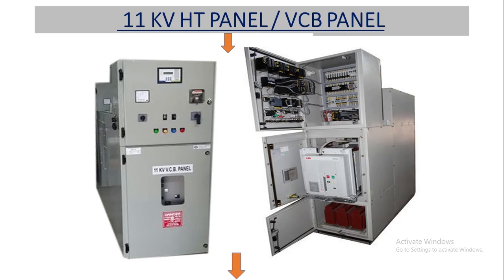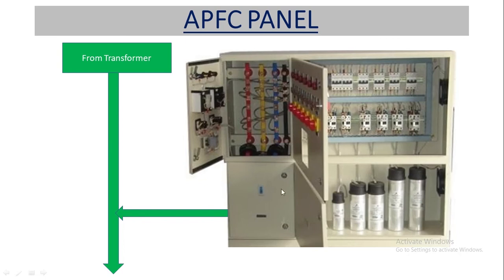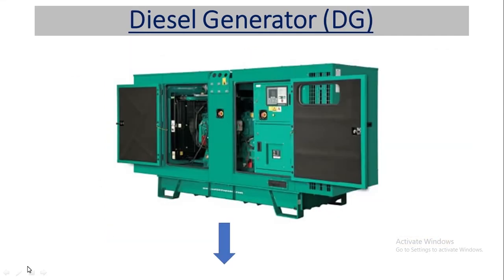In this panel we can see the VCB — vacuum circuit breaker — and beside it the PT, potential transformer, and CT, current transformer, which are used to measure current and energy. These are the control wires and control cabinets. After that, power feeds to this step-down transformer — 11KV to 440V. At the output side we have four terminals: three phase and one neutral. From the transformer, the APFC panel is connected in parallel to improve the power factor. This is the capacitor bank.